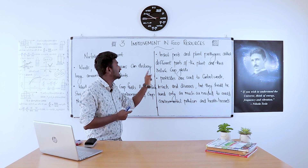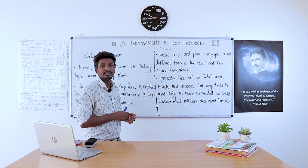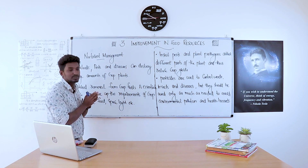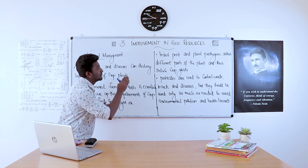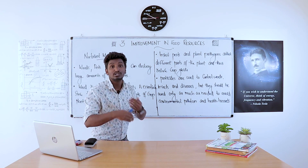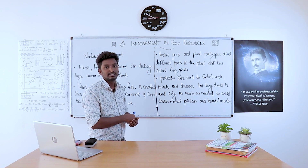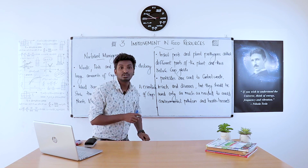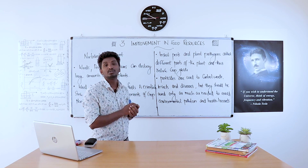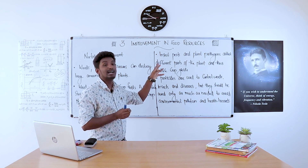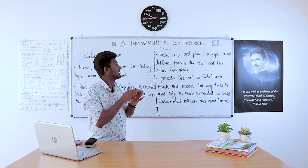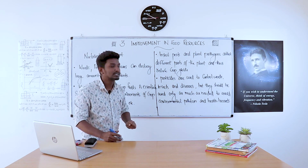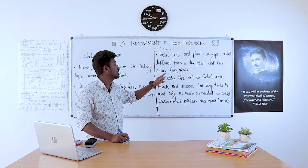Just like weeds, insects, pests, and plant pathogens are also harmful to our crops. They attack different parts of the plant and thus reduce crop yields.